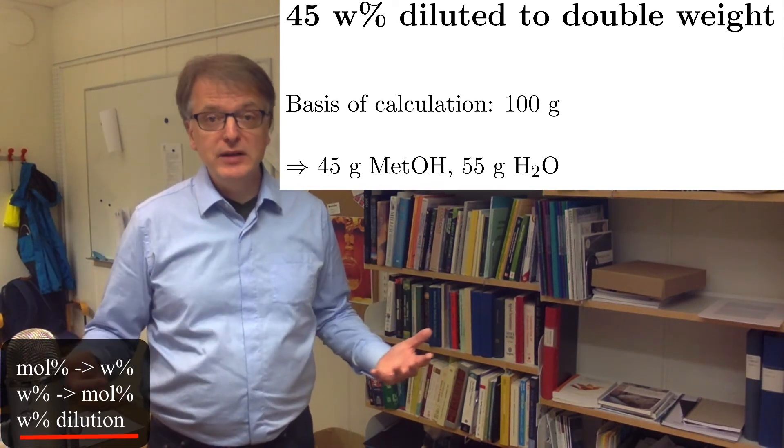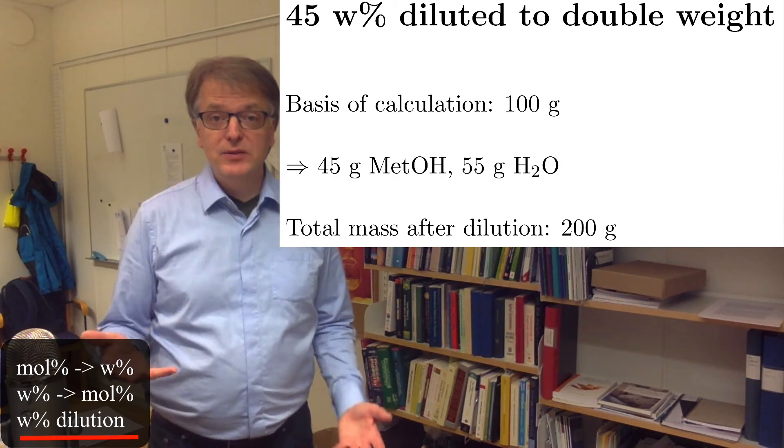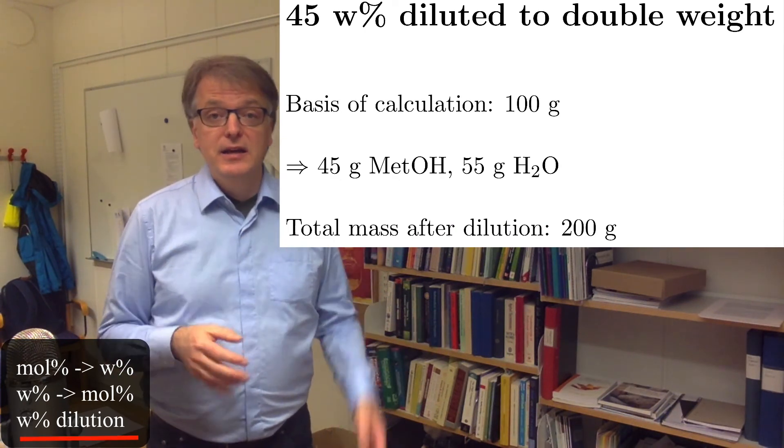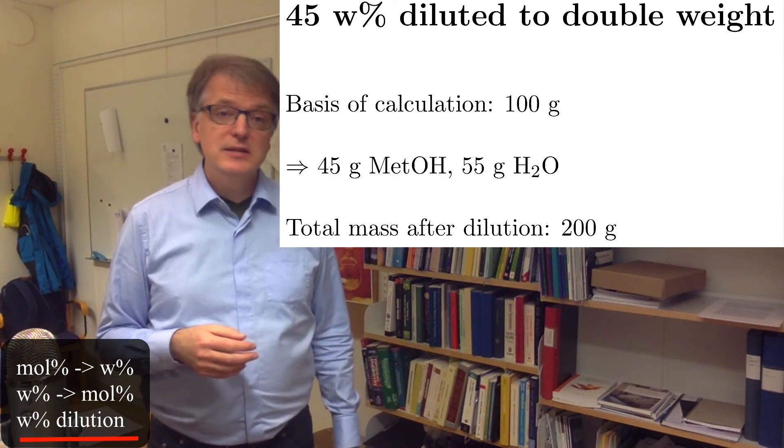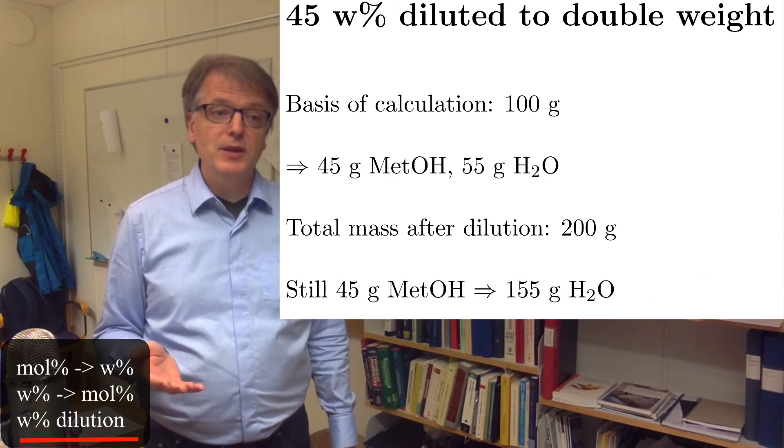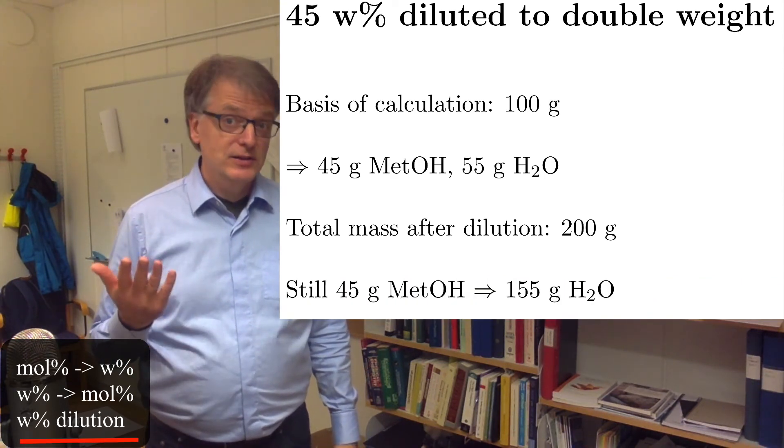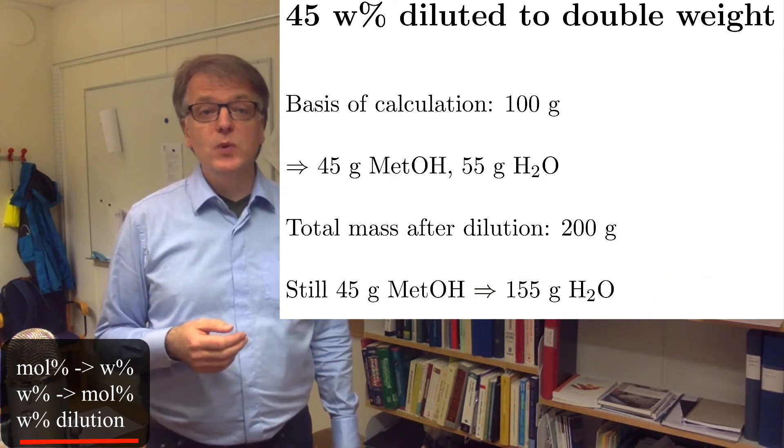We dilute to 200 grams total, but we haven't added any methanol. So that means we still have 45 grams of methanol and thus 155 grams of water.